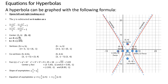The co-vertices are along the minor (vertical) axis at (H, K plus B) and (H, K minus B). With H equal to 3, K equal to negative 1, and B equal to 5: one co-vertex is (3, negative 1 plus 5) which is (3, 4), and the other is (3, negative 1 minus 5) which is (3, negative 6). The transverse for the major axis sits at y equals negative 1.